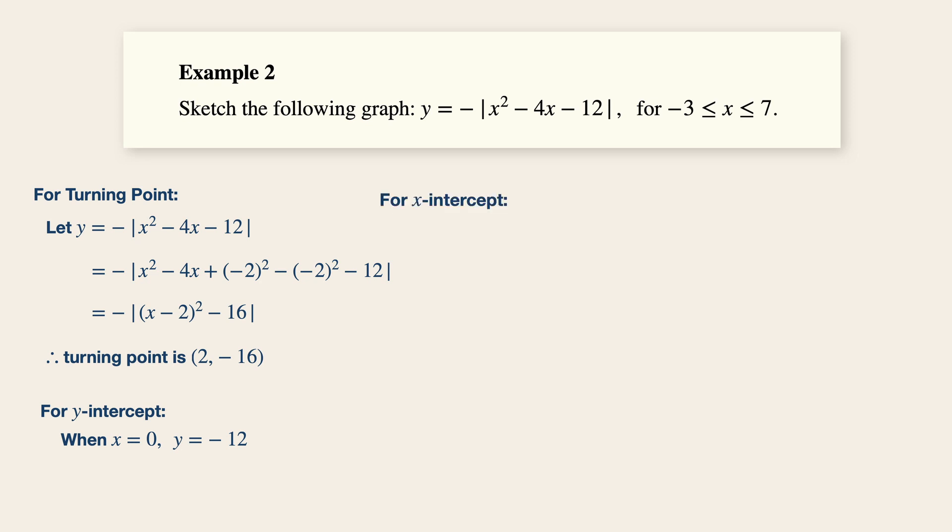Now, for the x-intercepts, we will let y equals to be 0. So x squared minus 4x minus 12 is equal to 0. By factorizing this expression, we will have x equals to 6 or x equals to minus 2.